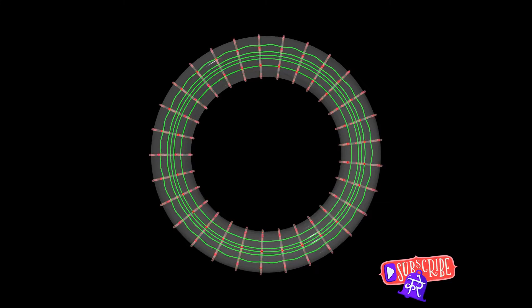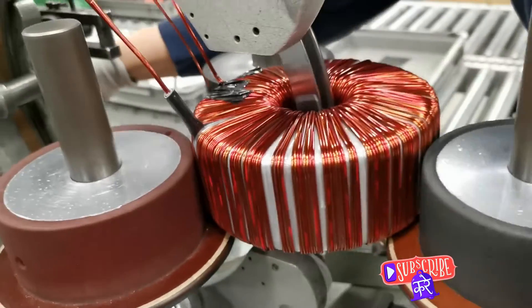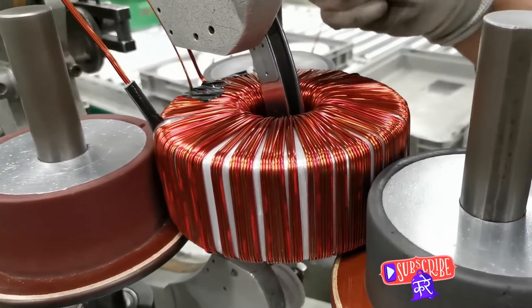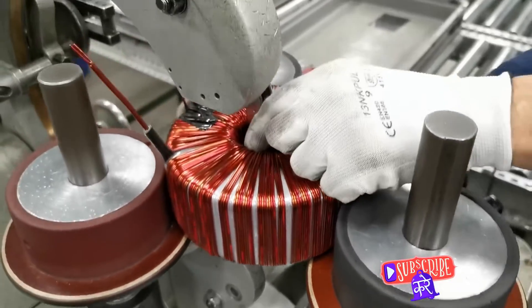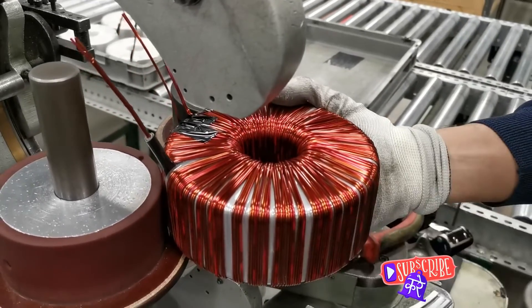This is typically made from a continuous strip of grain-oriented silicon steel or iron powder, wound into a donut shape. This core is the magnetic heart of the transformer, guiding the magnetic field from the primary winding to the secondary winding.